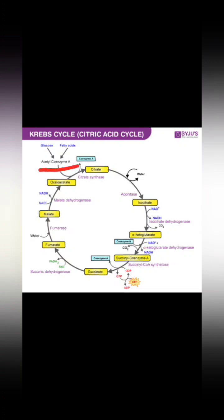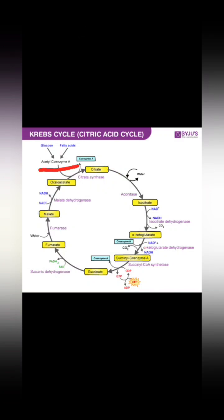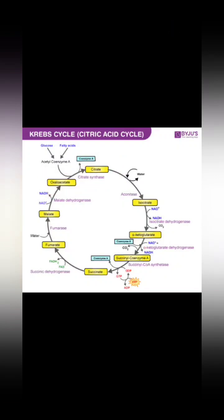Acetyl-CoA and oxaloacetate, in the presence of the enzyme citrate synthase, are converted into citrate. This is the first step of the Krebs cycle.